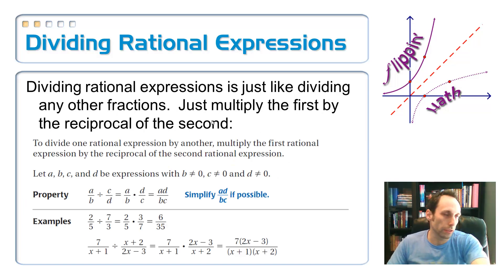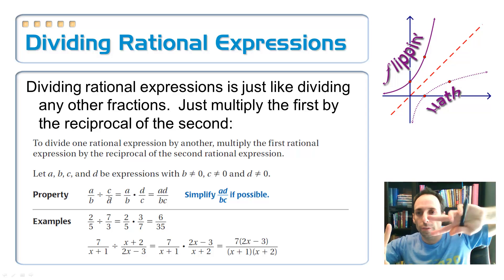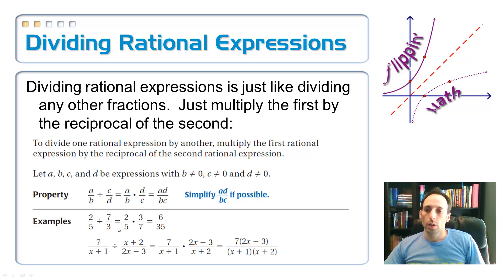Here's another example. The property, a divided by b, all divided by c divided by d. Flip the second one, multiply straight across. Down here at the bottom, with the actual example, 7 divided by x plus 1, all divided by x plus 2, divided by 2x minus 3. Notice nothing cancels. Nothing simplifies or factors. So you just have to flip the second one, multiply it straight across, and you don't have to worry about foiling that out. Just leave it in factored form. That's going to be okay. Save yourself a little bit of time.